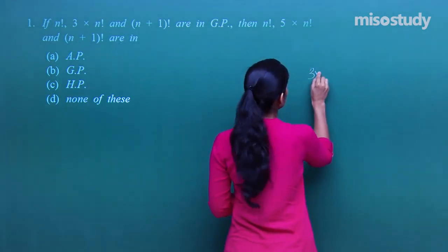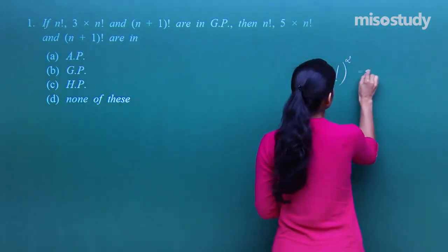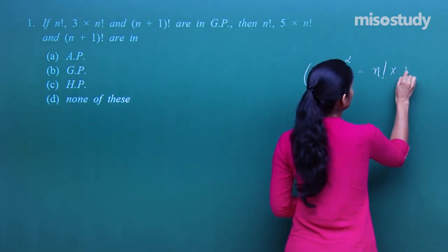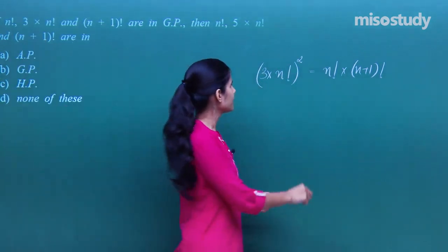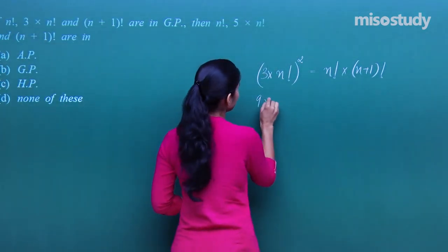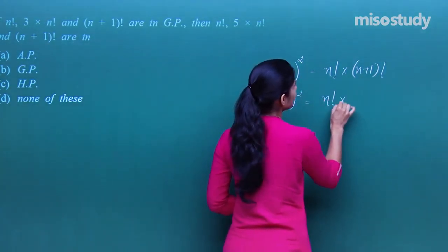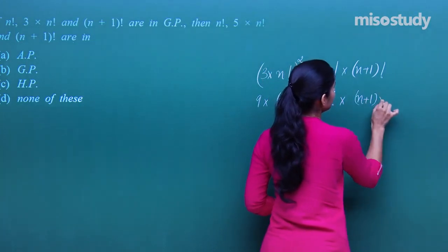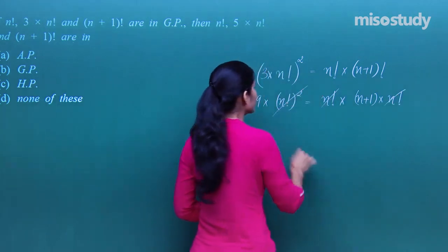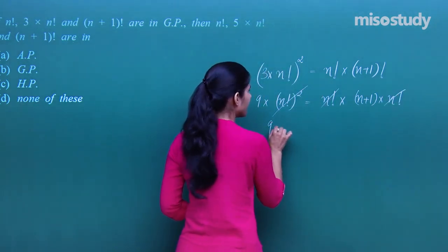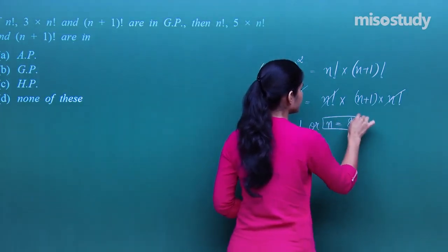So we get 3·n! whole squared equals n! into (n+1)!. This becomes 9·(n!)² equals n! into (n+1)·n!. The n! squared gets cancelled from both sides, leaving 9 equals n+1, so n equals 8.